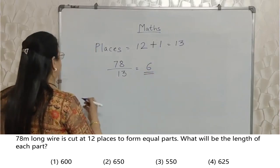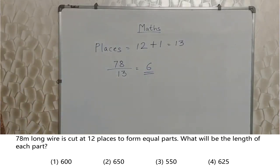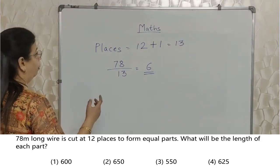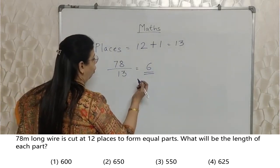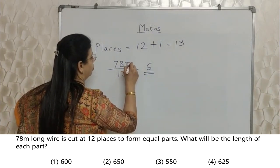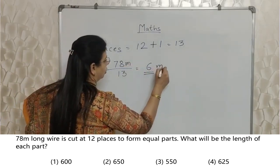So 78 divided by 13. Nahi gaya hai. This is the answer, 6 meters. Very very easy, isn't it? But 6 may not be there in your options. Then what? Have I done something wrong? No.